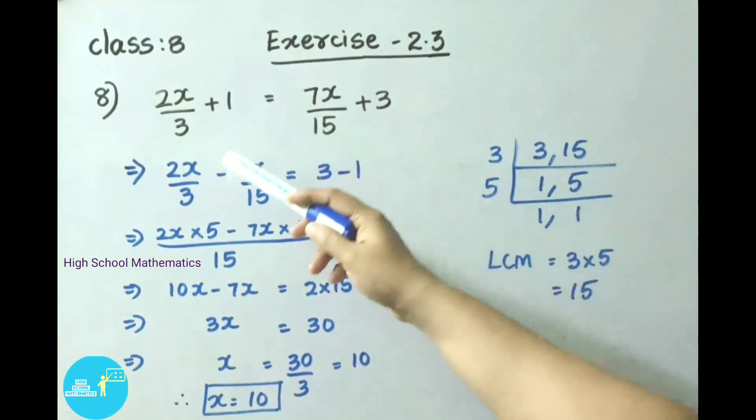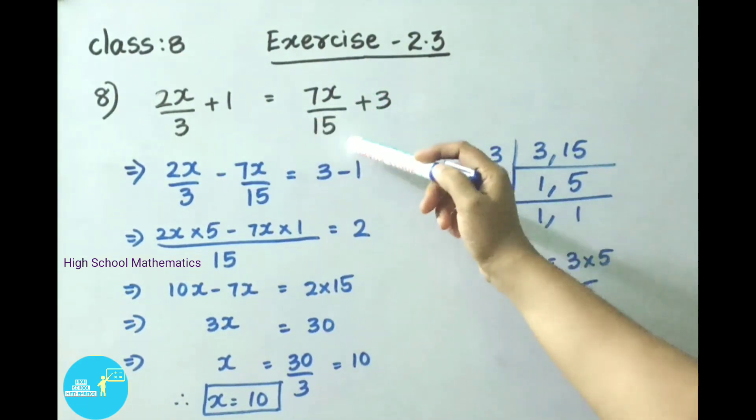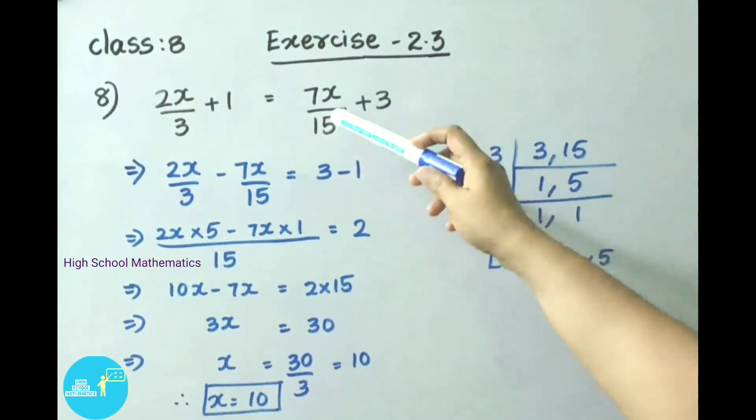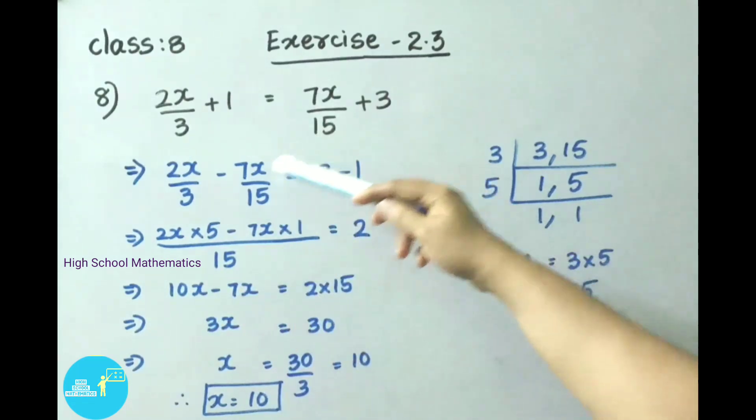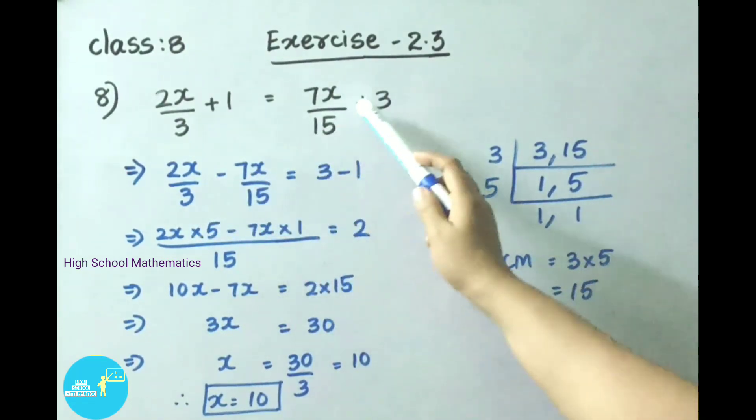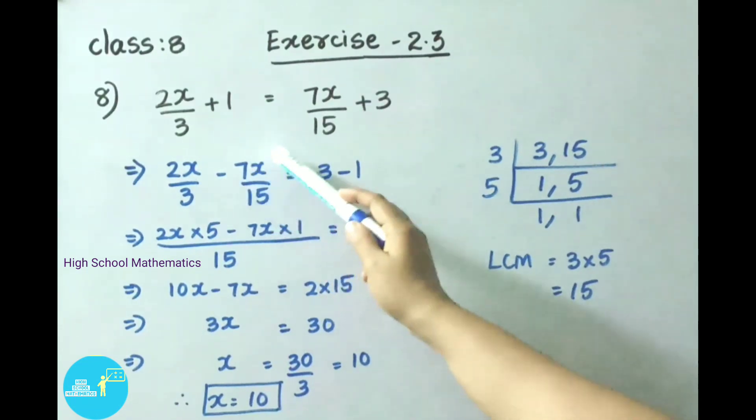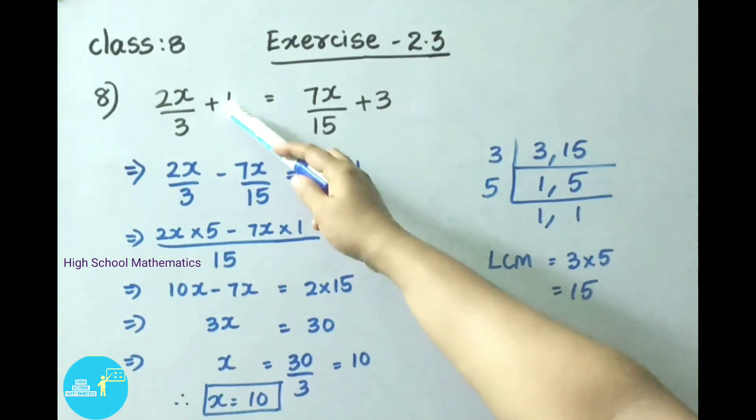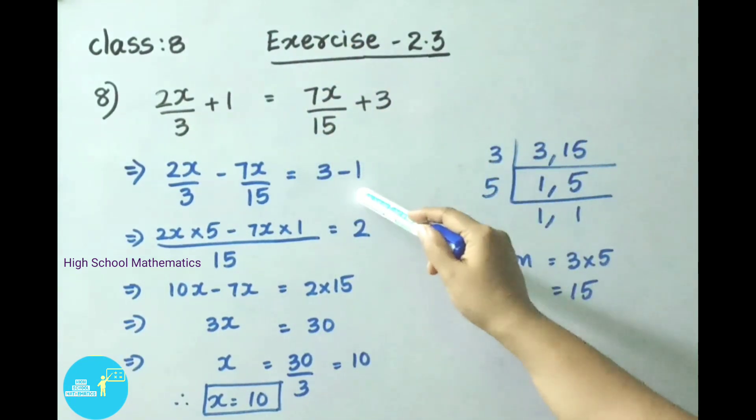2x by 3 plus 1 equals 7x by 15 plus 3. Let us bring the x term, the variable term, to the left side. So 2x by 3, and 7x by 15 on transposing becomes minus 7x by 15, that equals 3 plus 1 on transposing became minus 1. So 3 minus 1.